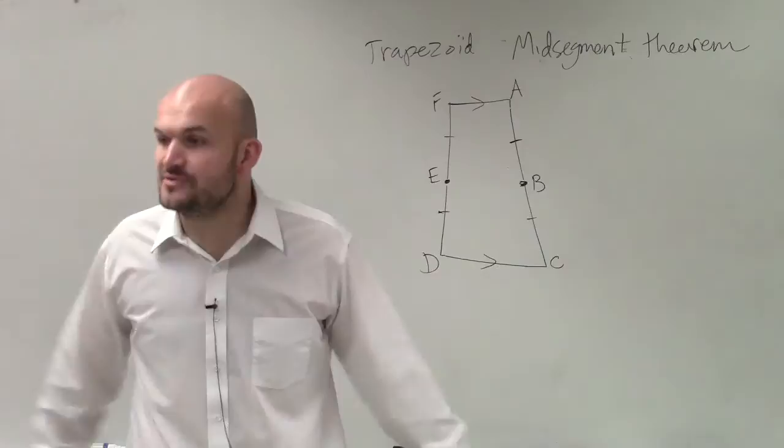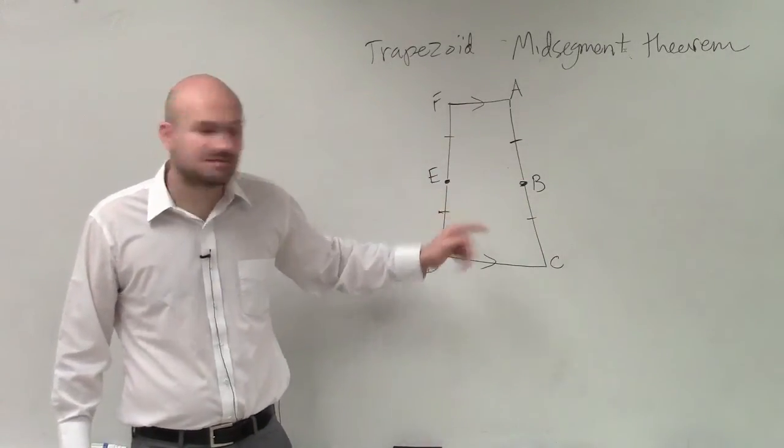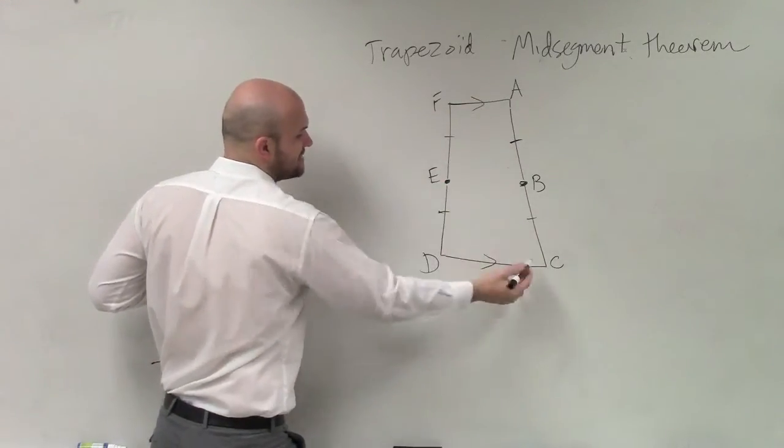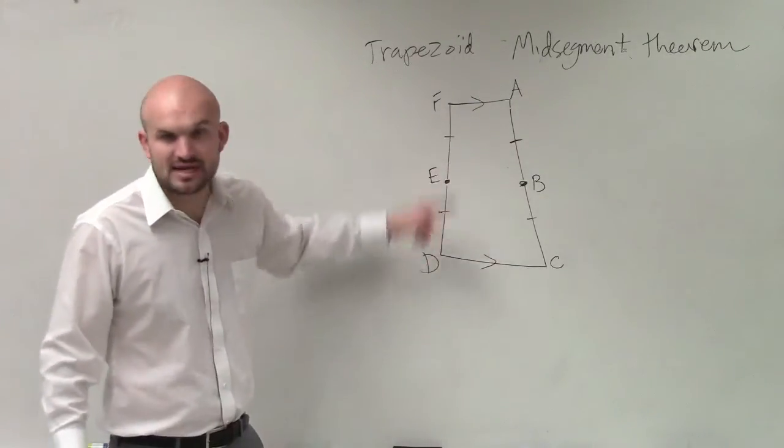If we have this trapezoid and I find the midpoint of both of my two sides, we can see that AF and CD are both parallel lines. If I determine the midpoint, that means I break both of those sides in half,